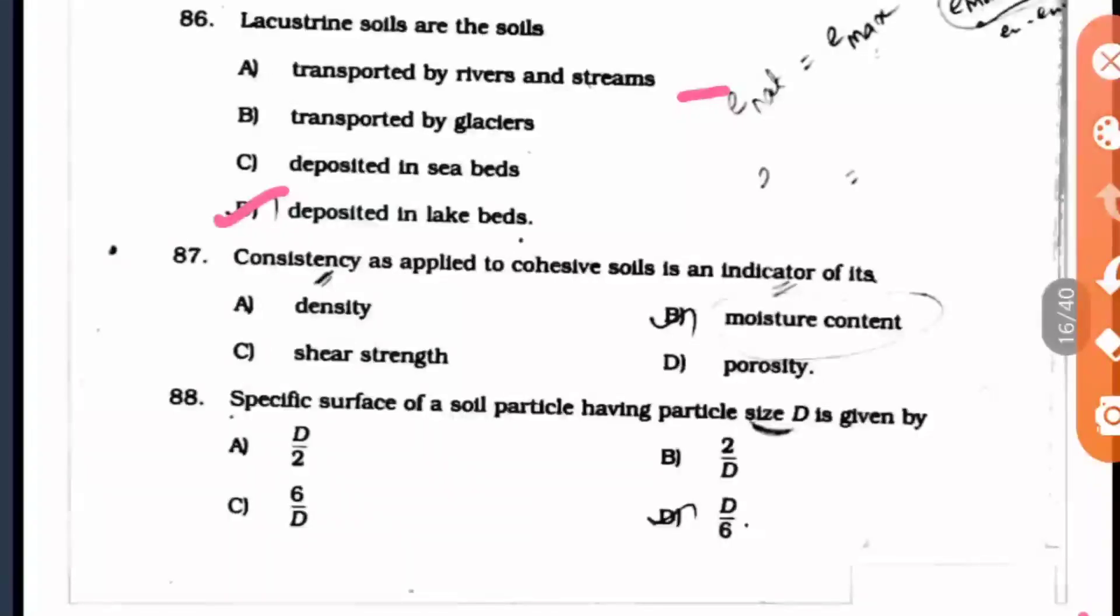Question 87: Consistency as applied to cohesive soils is an indicator of its shear strength, option C. Question 88: Specific surface of a soil particle having particle size D is given by 6/D, option C.